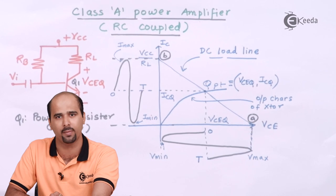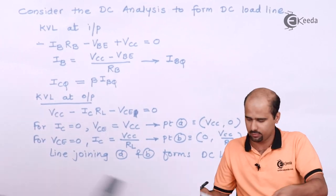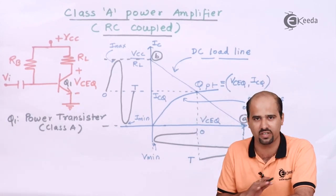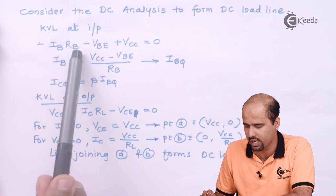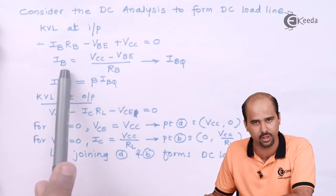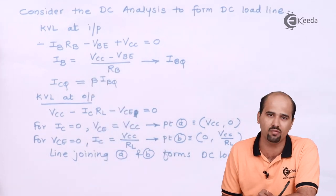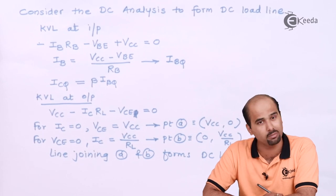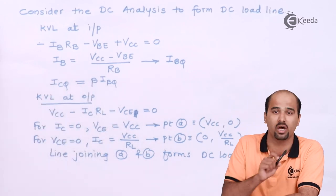Let's do the mathematical analysis. We take this particular circuit and apply KVL on the input side as well as the output side, as we have done with the BJT voltage amplifier. Applying KVL at the input side gives the equation: −IB·RB − VBE + VCC = 0. From that I get the first Q point parameter: IBQ = (VCC − VBE) / RB. Once we get IBQ, we have the HFE (beta) rating from the power transistor datasheet, and multiplying beta by IBQ gives us ICQ — the second Q point parameter.